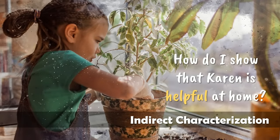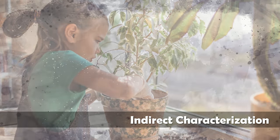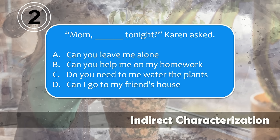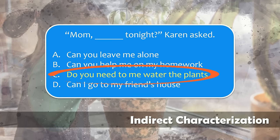One more. How do I show that Karen is helpful at home? On a piece of paper or in your head, answer this question. 'Mom, _____ tonight?' Karen asked. A: Can you leave me alone? B: Can you help me on my homework? C: Do you need me to water the plants? D: Can I go to my friend's house? Time's up. If you picked C — 'Do you need me to water the plants?' — you're correct.